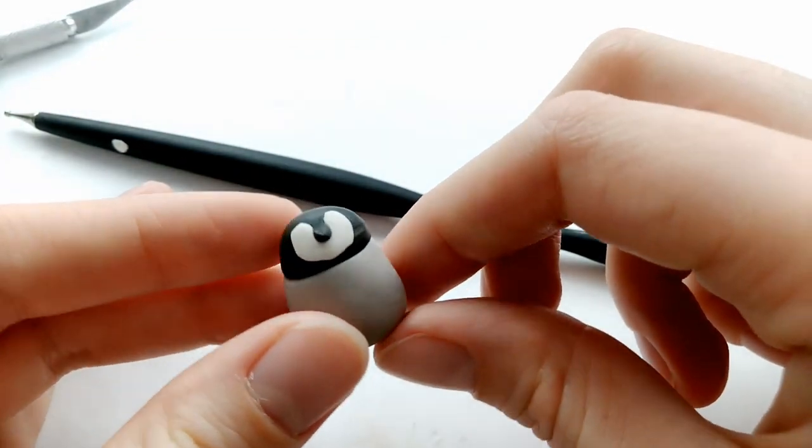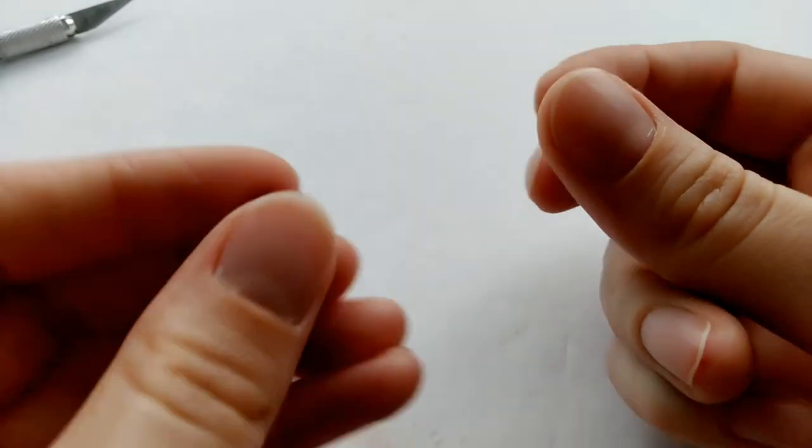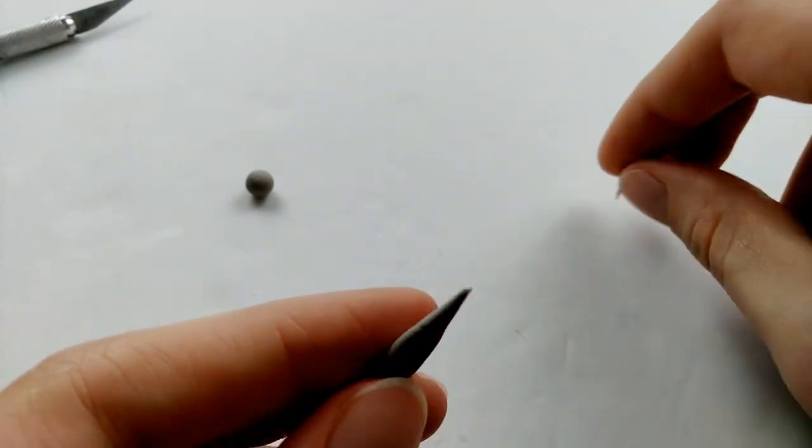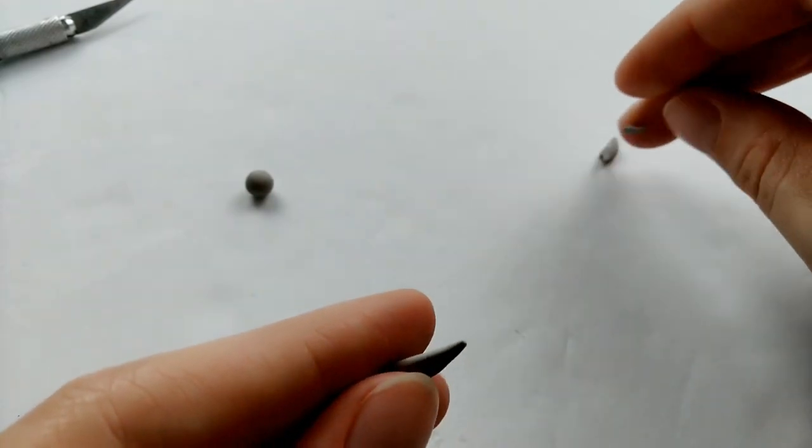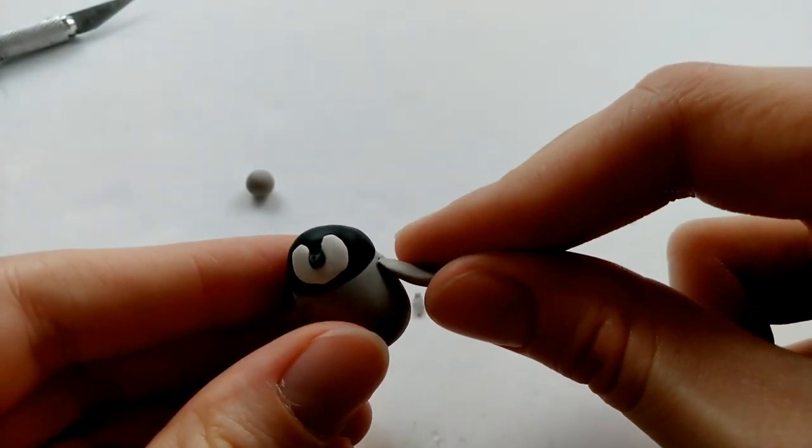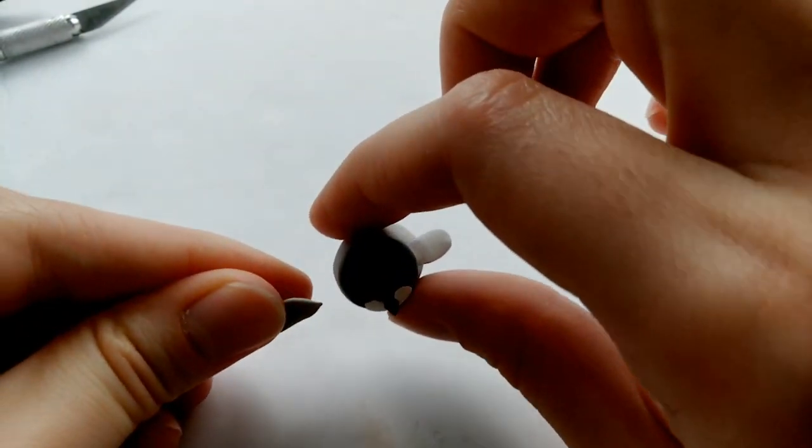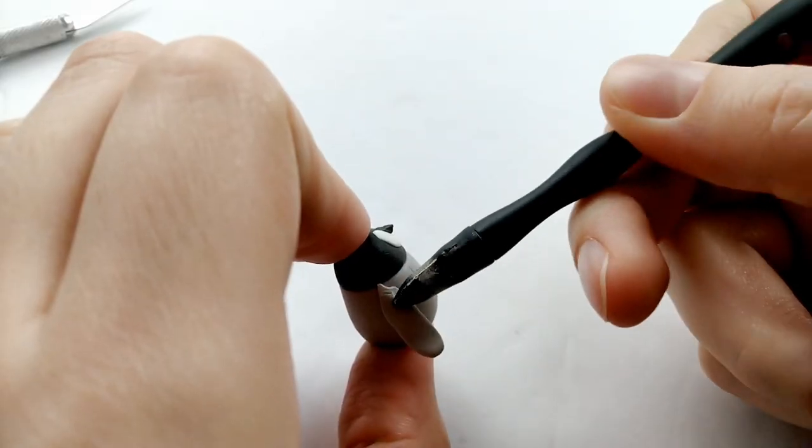Next, the arms. We're just going to roll out some grey clay into some teardrop shapes and rip off any excess clay from the top if you need. Then we're just connecting that to the sides of the penguin. And I'm using a tool to smooth out the edges. And just do the same thing for the other side.